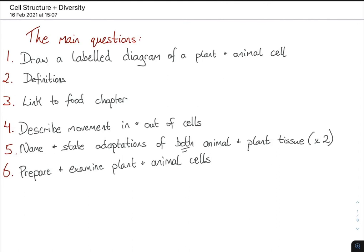You have to name and state adaptations of both animal and plant tissues. You need to know two for each — two animals, two plants. And finally there is an experiment involved in this, and that's to prepare and examine both plant and animal cells. So we'll get started.